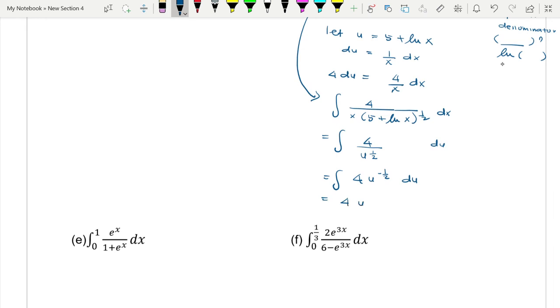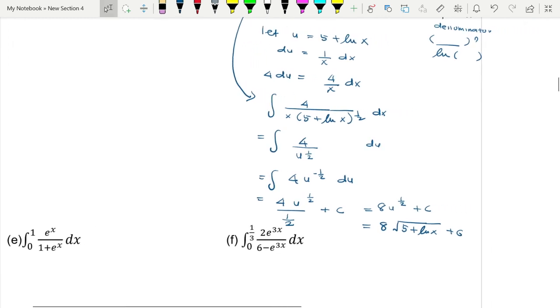So 4u^(-1/2): plus 1 will be 1/2, divided by 1/2 plus c. Basically this would be 8u^(1/2) + c. So you substitute u: 8√(5 + ln x) + c. This is for the indefinite integral, but our question is from 1 to e.